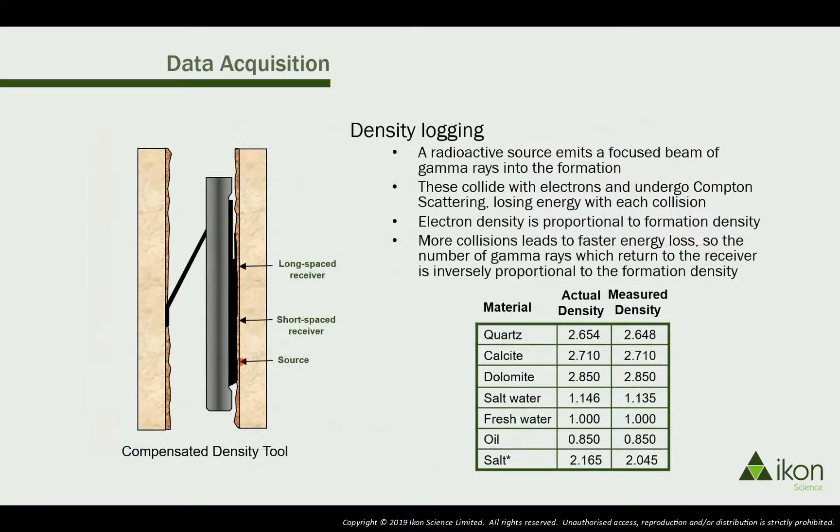The density log is not particularly reliable in bad hole conditions, as it's a shallow reading tool and requires good contact with the borehole wall. However, it does usually come with the delta-rho log, which describes the size of the correction being applied, giving us a good idea of the level of confidence we can have in the reading.